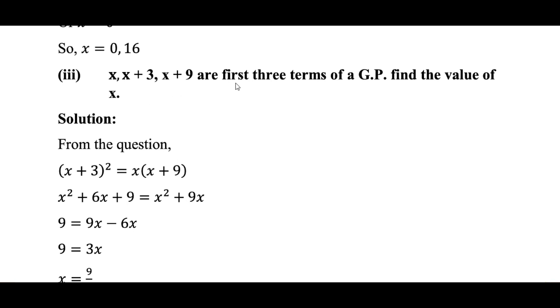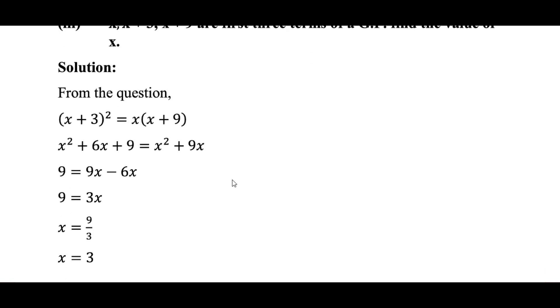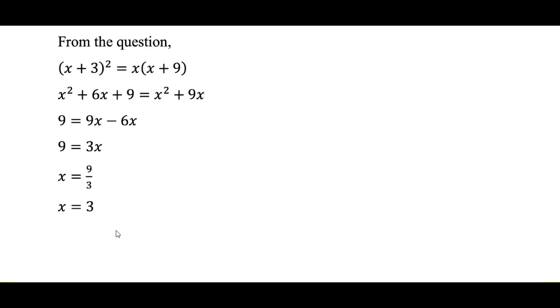x, x+3, and x+9 are the first 3 terms of a GP; find the value of x. Using the GP condition: (x+3) squared equals x times (x+9). After a few steps of simplification, the value of x equals 3.